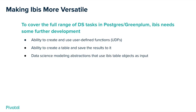IBIS is still a new package, so there are some areas where it still needs fleshing out to cover the full range of data science tasks. For example, it still needs the ability to create and use user-defined functions. In my experience at Pivotal, we often use UDFs to get our jobs done. It also requires the ability to create a table and save results to it. And data science modeling abstractions that could use IBIS objects would be very helpful — for example, an equivalent to scikit-learn where the dot fit method could take in an IBIS object as input.